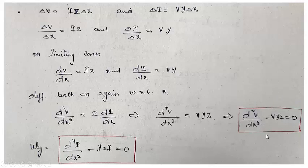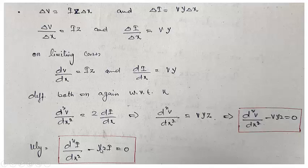This is a second-order homogeneous differential equation since there is no forcing function. Its auxiliary equation will be d² minus Y·Z equals 0. Similarly, this is the second-order differential equation of current with respect to x: d²I/dx² equals Y times dV/dx, and dV/dx equals I·Z, giving d²I/dx² minus Y·Z times I equals 0. Both equations have the same characteristic equation with roots equal to the square root of plus or minus Y·Z.